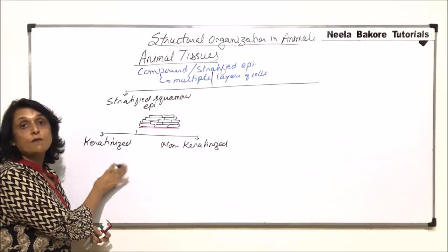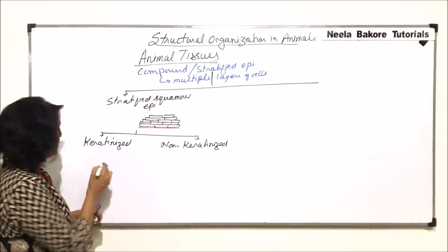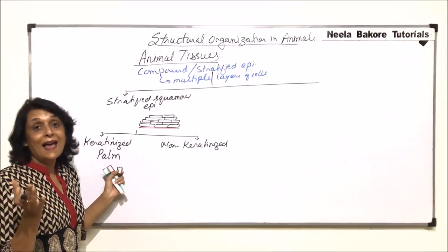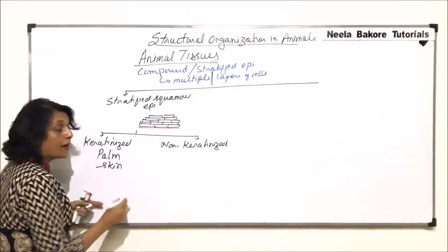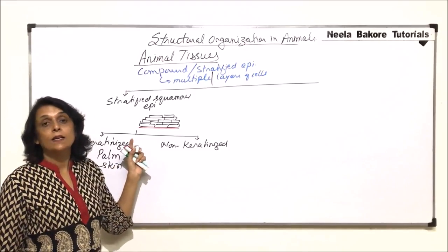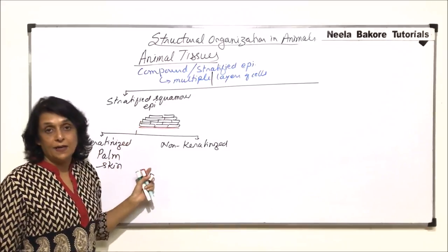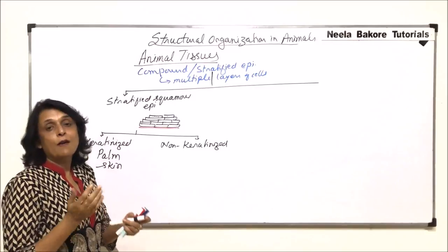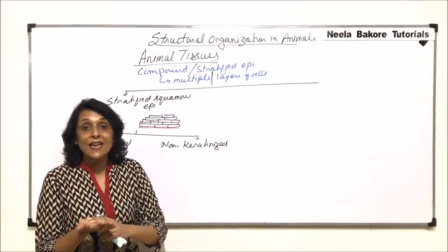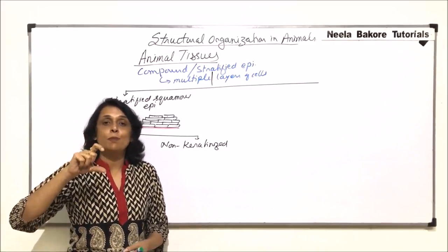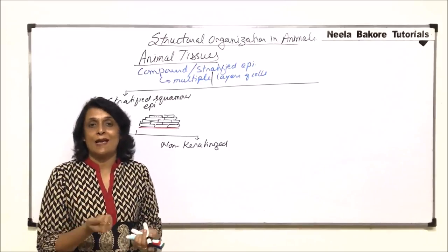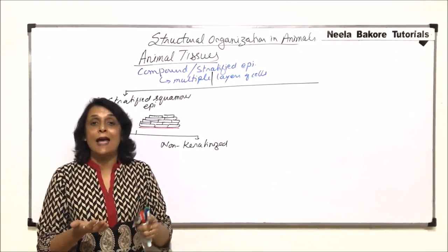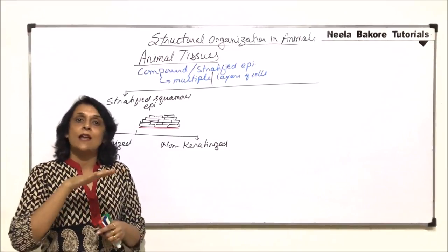Let us find the locations where we would find this. The palm, that is the upper part of the hand, sole, and skin — these are the areas where we find keratinized stratified squamous epithelium. The cells are flat, but the upper layers would have keratin deposition. When we see our palm or sole, we find that this skin is slightly thicker, because it is multiple-layered and there is too much friction. We work with our hands and we walk, so there is friction on our sole and palm, which can cause damage.